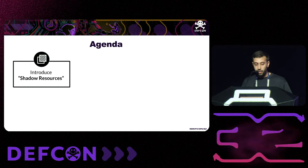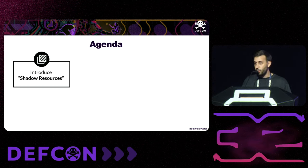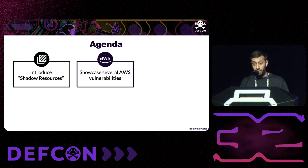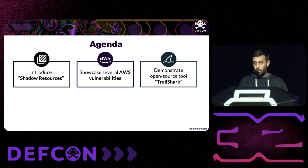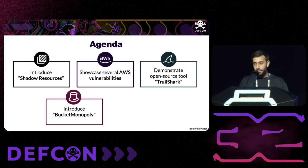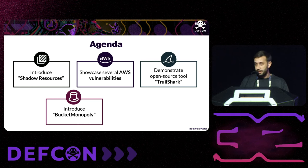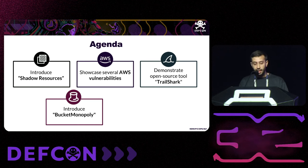Let me go over the agenda. We will introduce what are called shadow resources, then several vulnerabilities we found on AWS, and an open source tool we developed during our research that helped us find more vulnerabilities. After that, we will introduce a new technique called Bucket Monopoly, and we will end by suggesting mitigations and recommendations.